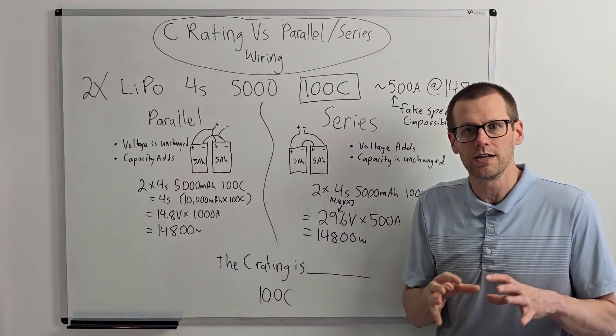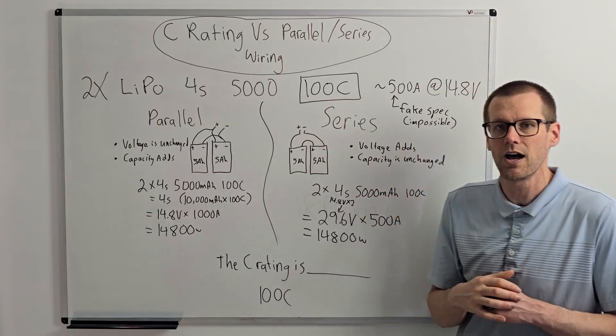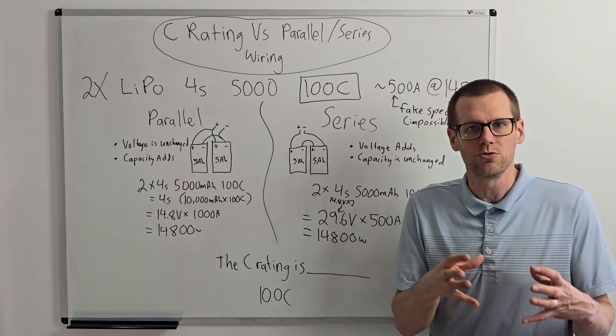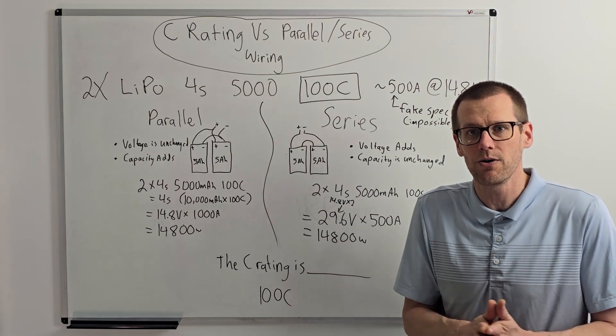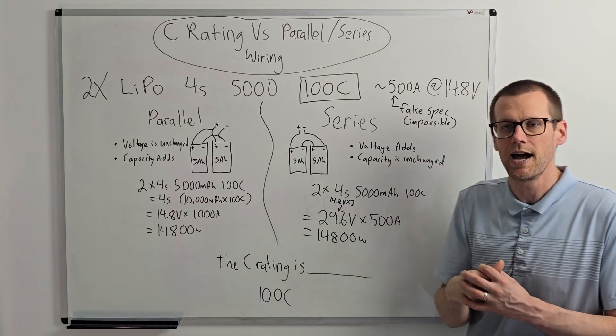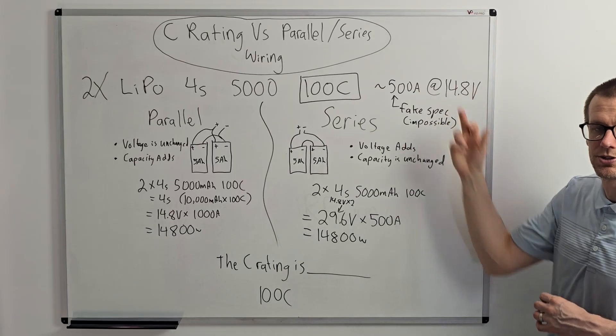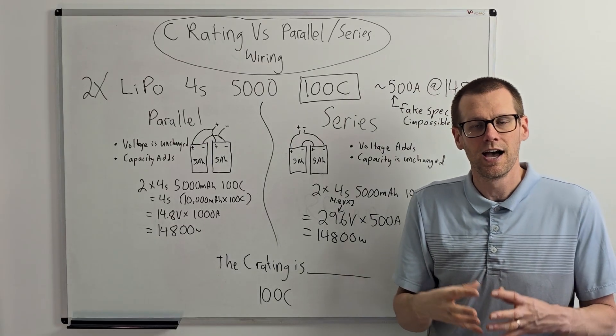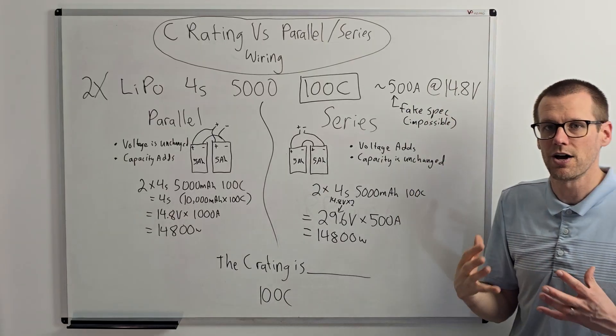And then to make it really easy for us to make some simple calculations, we're going to use a C rating of 100C. If we do the math on this, 100C multiplied by our 5 amp hour gives us a continuous current rating of 500 amps. And of course, this would be at the voltage of 14.8. And I'm using the nominal voltage here because at that current rating, I can guarantee you that you're not going to have 14.8 volts of power.